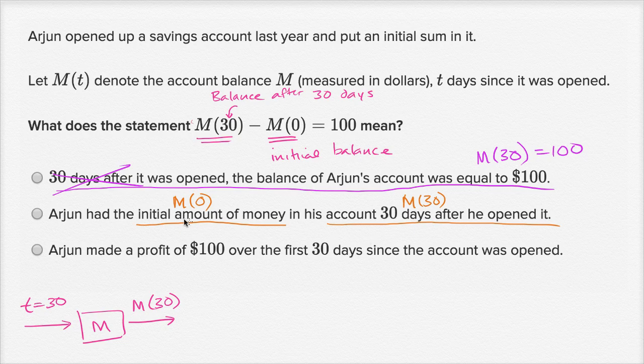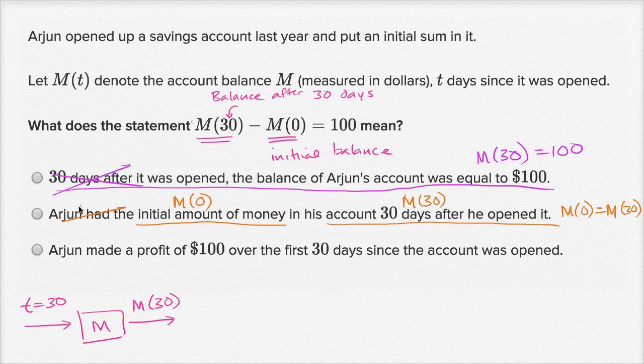So if these are the same amounts of money, you would have had an equation like this: M(0), the initial amount, is equal to the amount after 30 days, M(30). That's not what they told us over here. So we can rule that out.